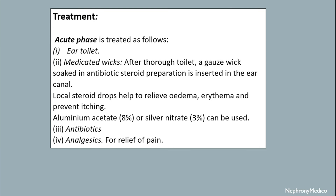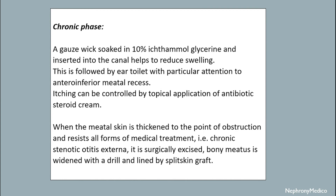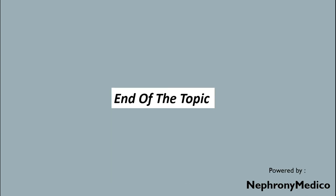Treatment: The acute phase is treated as follows — ear toilet, medicated wicks, antibiotics, and analgesics. A gauze wick soaked in 10% ichthammol glycerin is inserted into the ear canal to help reduce swelling. This is followed by ear toilet with particular attention to the antero-inferior meatal recess. Itching can be controlled by topical application of antibiotic-steroid cream. When the meatal skin is thickened to the point of obstruction and resists all forms of medical treatment, it is surgically excised and the bony meatus is widened with a drill and lined by a skin graft.